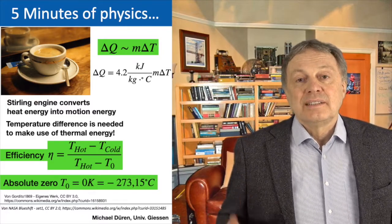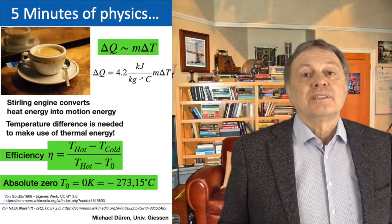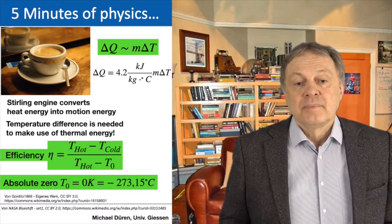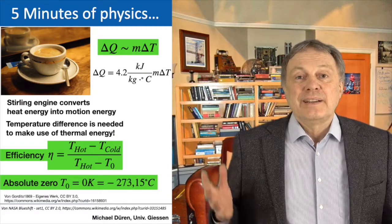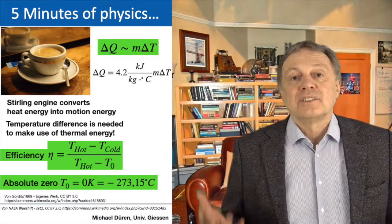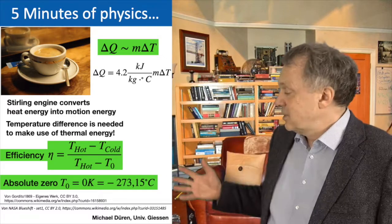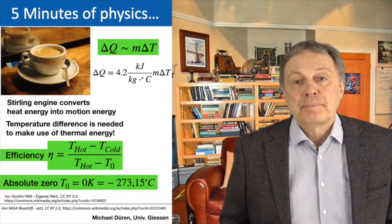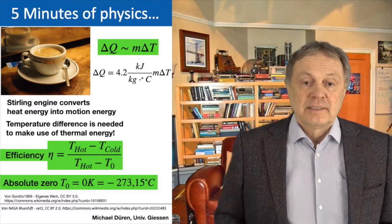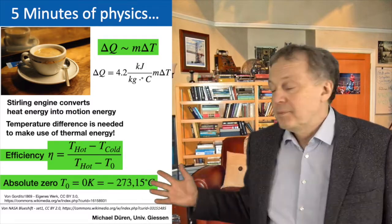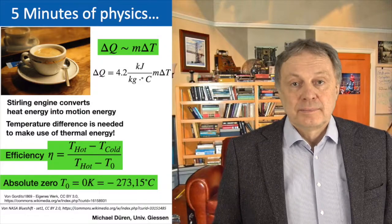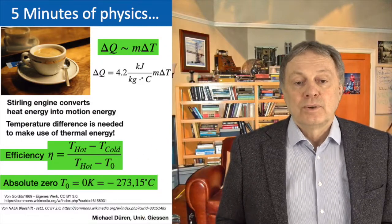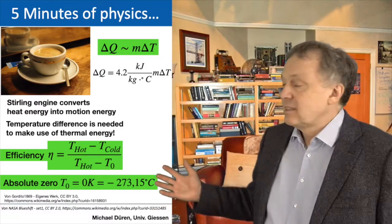Absolute zero is also called zero Kelvin if you use the physics unit Kelvin instead of degrees Celsius. Nothing in the universe is colder than that. Such a Stirling engine — also called a Carnot cycle — has an efficiency which can never be bigger than the one given by this formula. The same formula is true for any other machine which converts heat into mechanical work, so what always counts is the temperature difference.